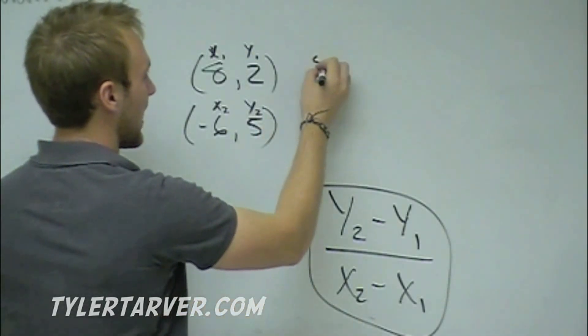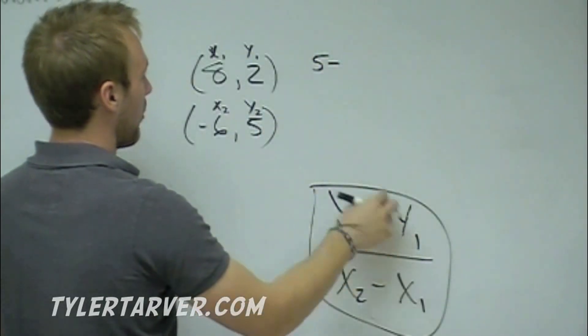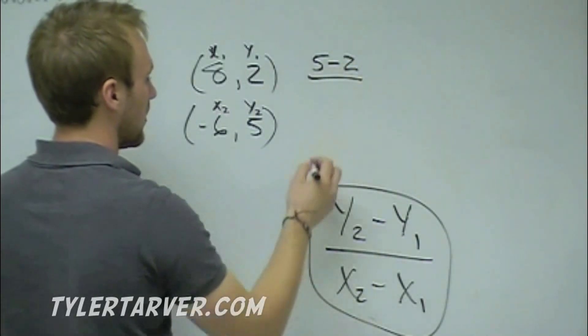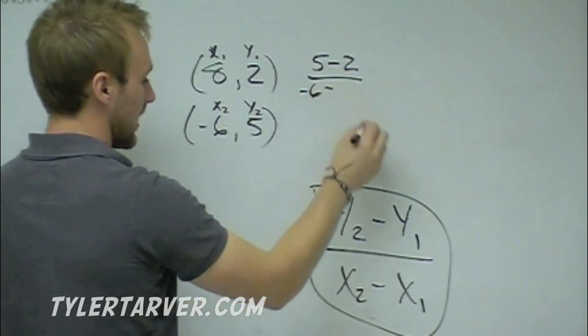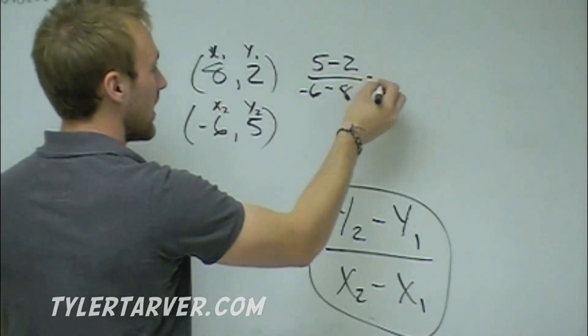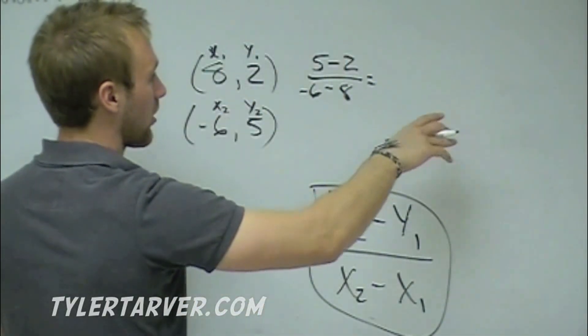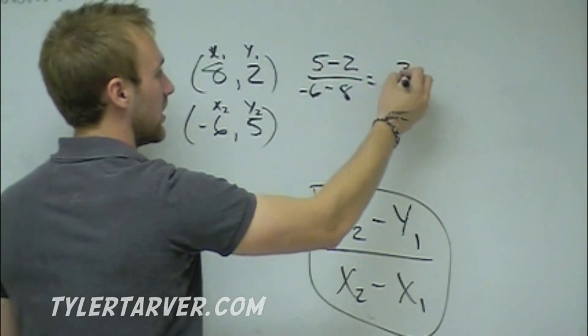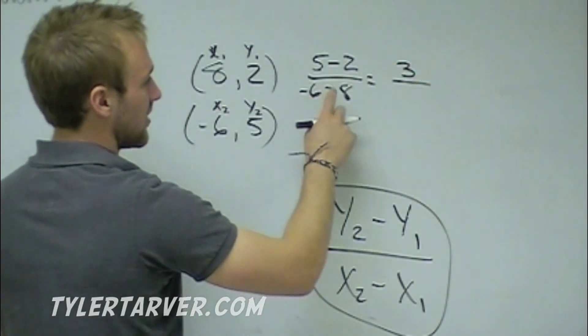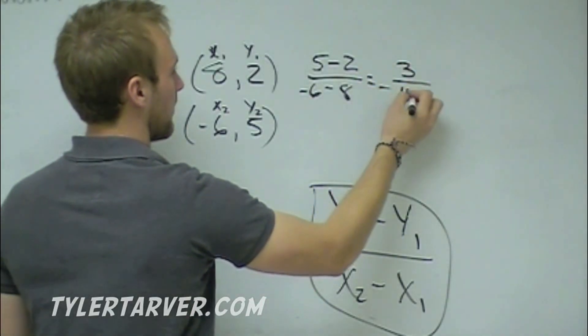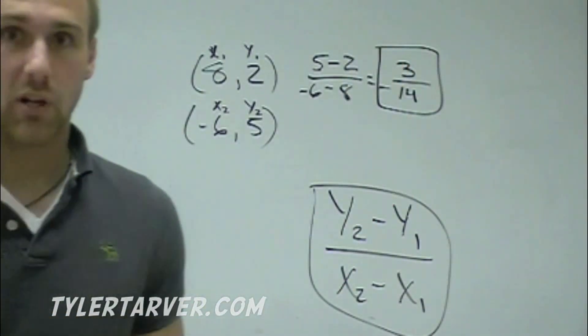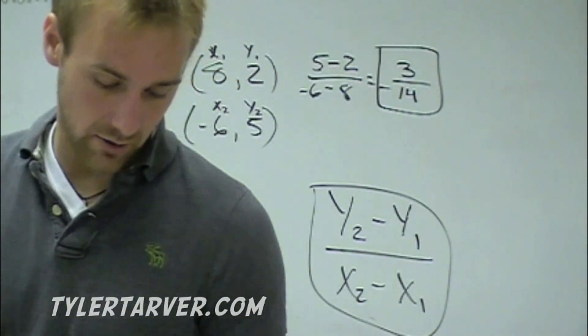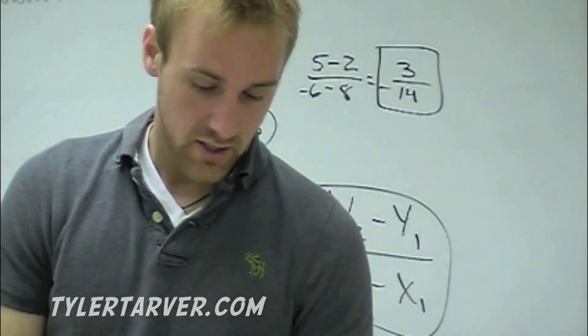First is Y2. That's 5 minus Y1 is 2. X2 is negative 6 minus X1 which is 8. Then we just work across the top, work across the bottom. 5 minus 2 is 3. Negative 6 minus 8 is negative 14. You got your answer. It's as easy as that, guys. Plug in what you know to find what you don't know.